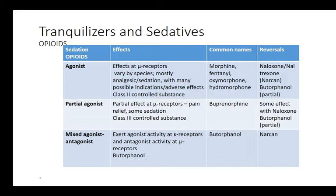Opioids include agonists, partial agonists, mixed agonist-antagonists, and antagonists. Agonists are very strong-acting. Common opioid agonists include morphine, fentanyl, oxymorphone, and hydromorphone — they act at the mu receptors. Effects vary by species but usually include analgesia (pain relief) and sedation.